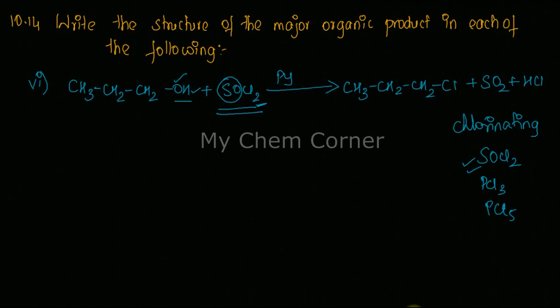So whatever reagent you are using, all the elements are used up. One of the Cl from SOCl2 will replace the OH to give your product. Another Cl from here is going to react with the hydrogen from the OH group to give you HCl.